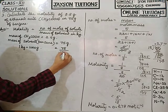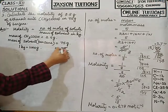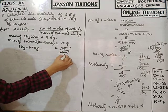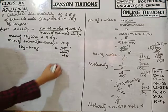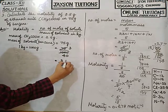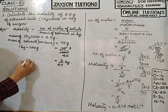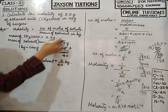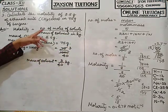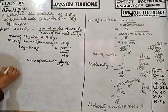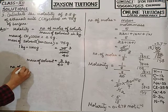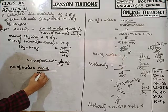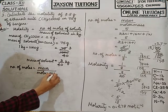75 ÷ 1000 = 3/40 kilograms. This is my mass of solvent. Now I need the number of moles of solute. Number of moles = mass ÷ molar mass.